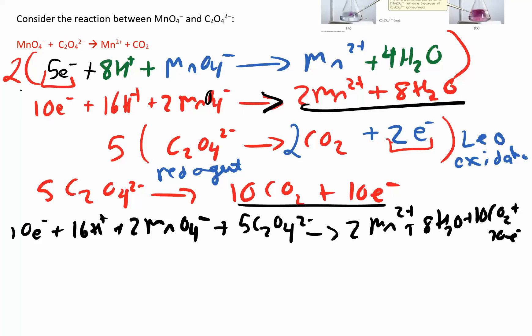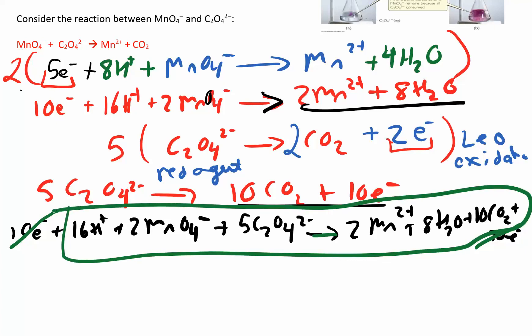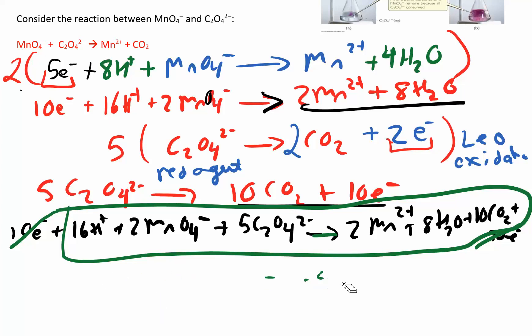Add everything on the left side together and everything on the right side together. The 10 electrons cancel because I'm gaining 10 and losing 10. Check whether H+ or waters cancel — in this case since the second reaction didn't need H+ or water, we're fine. This is our final answer. As a final check: the charge on the left is +16 − 2 − 10 = +4, and on the right it's also +4, so the charge is balanced.